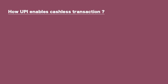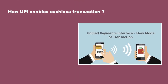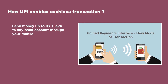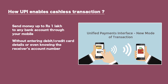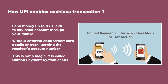How UPI enables cashless transactions: send money up to rupees 1 lakh to any bank account through your mobile, without entering debit or credit card details, or even knowing the receiver's account number. This is not magic — it is called the Unified Payment System, or UPI.